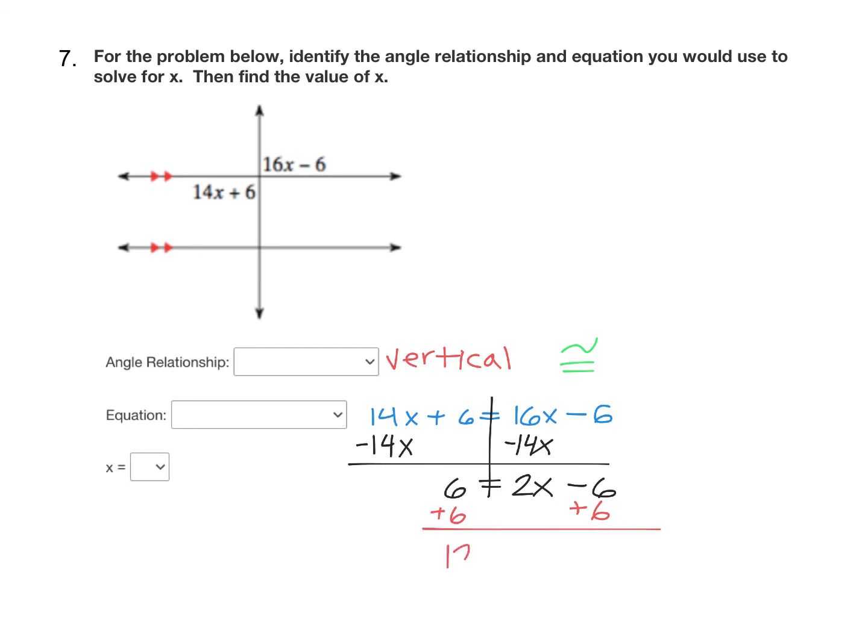So that's 12 equals two x. Then we finish it up by dividing by two. Twelve divided by two is six. So our answer is x equals six.